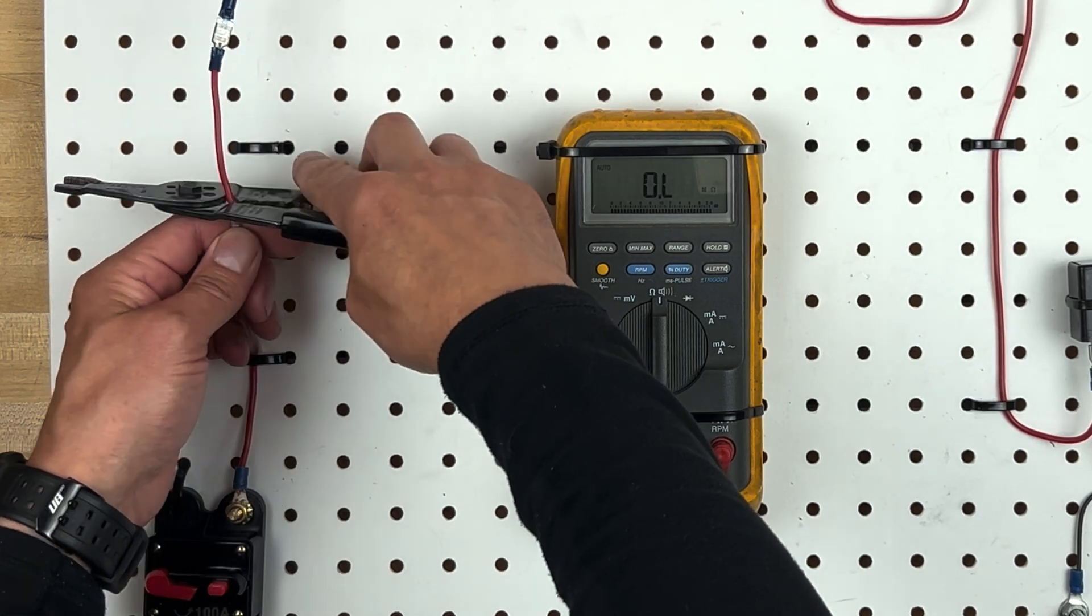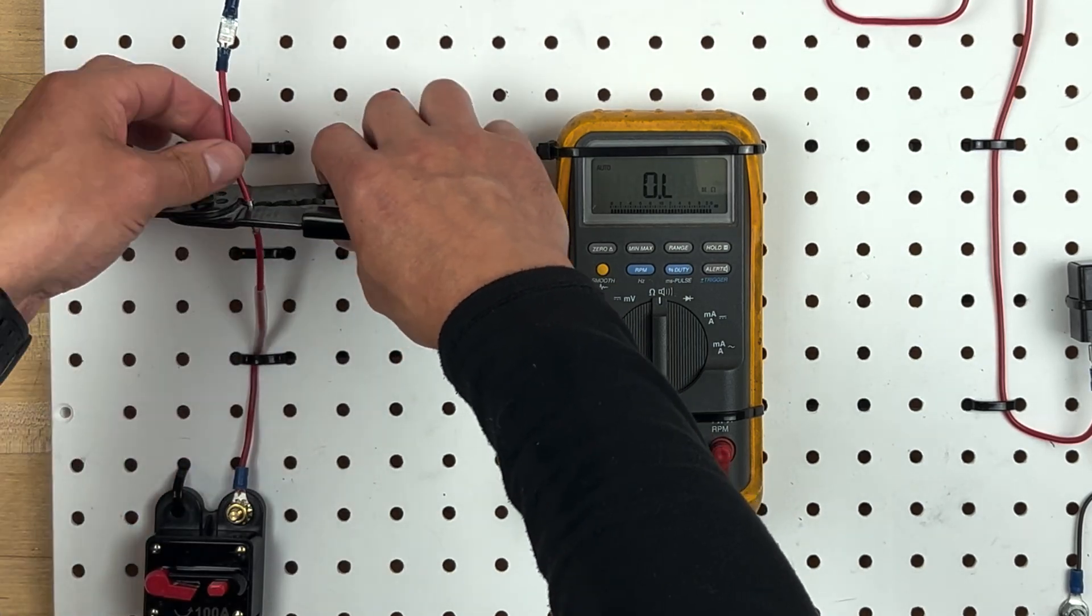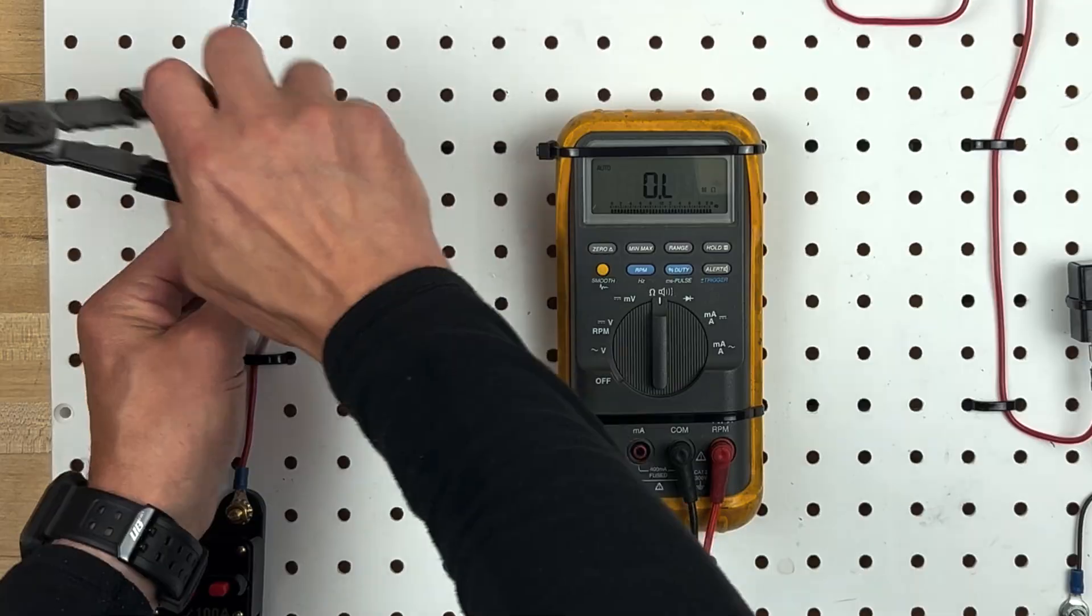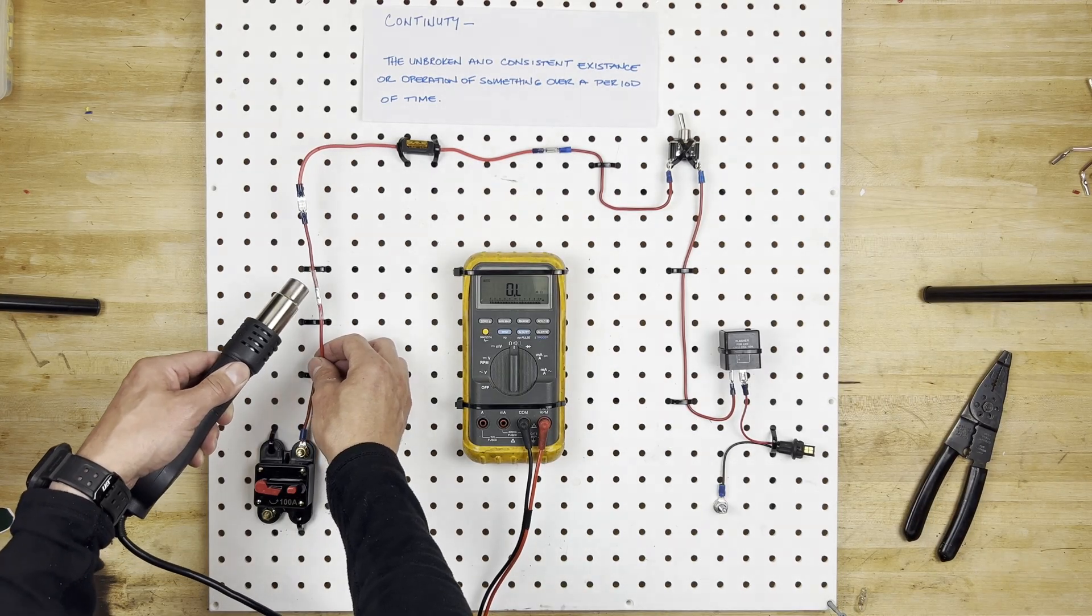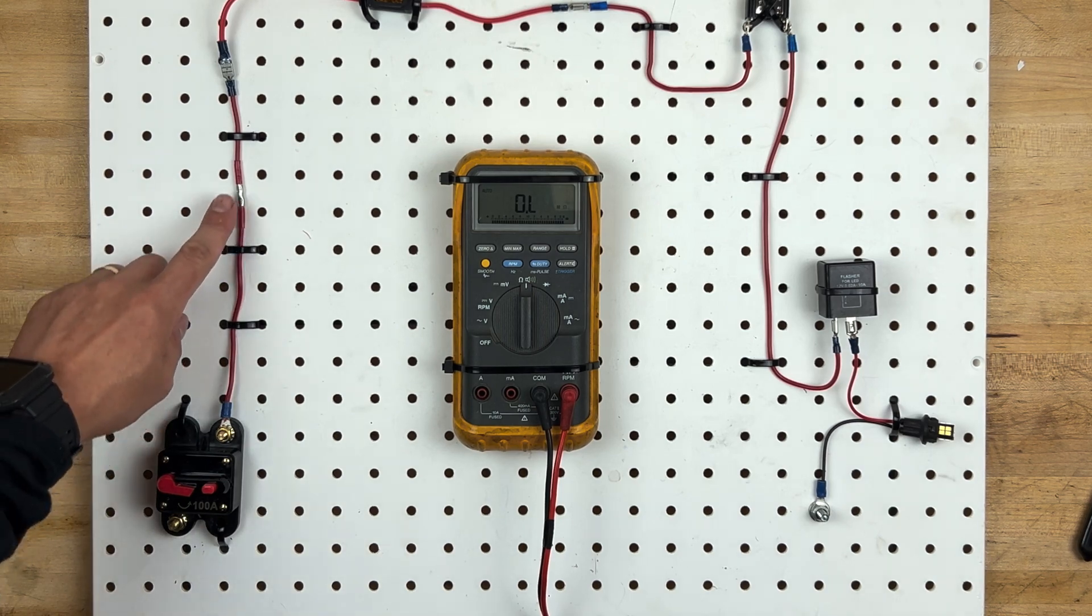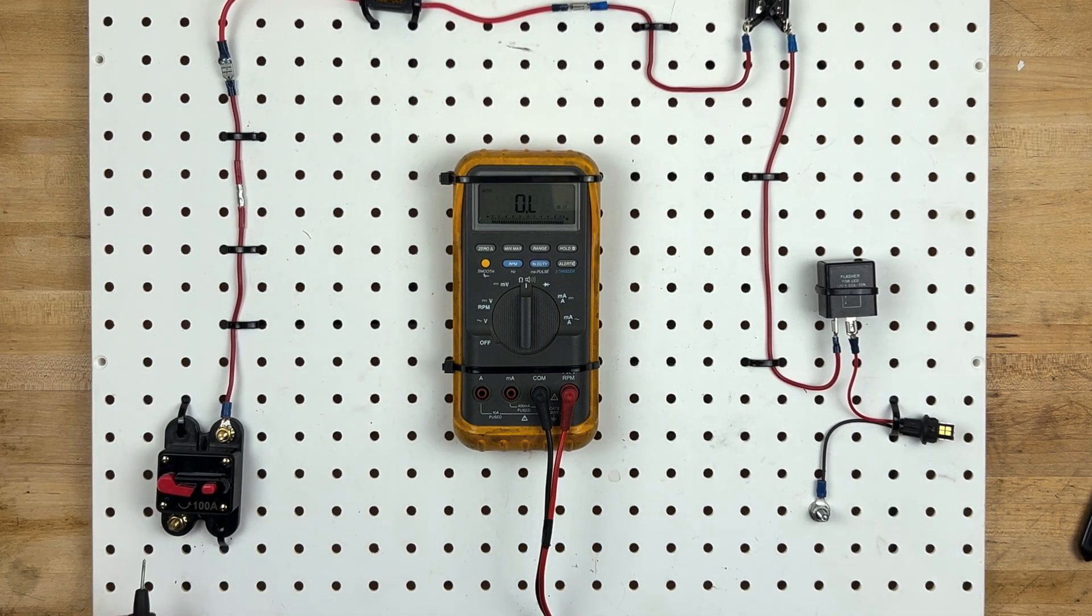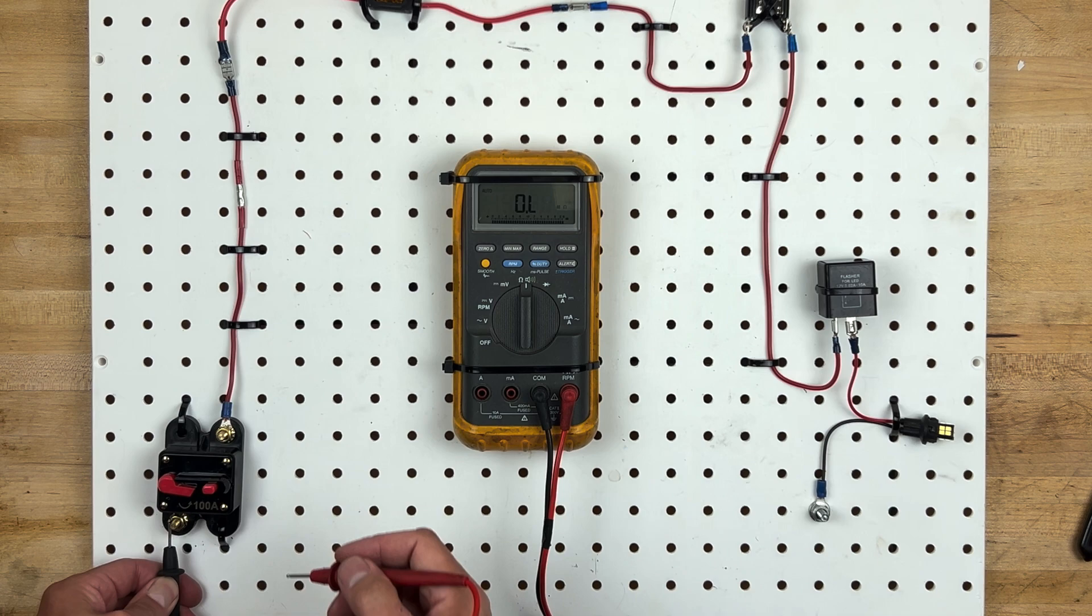These are not my favorite pliers or crimpers, but they are the closest. We now have the new butt connector in here with a nice shrink wrap, and we are going to test for continuity again and make sure it is working.